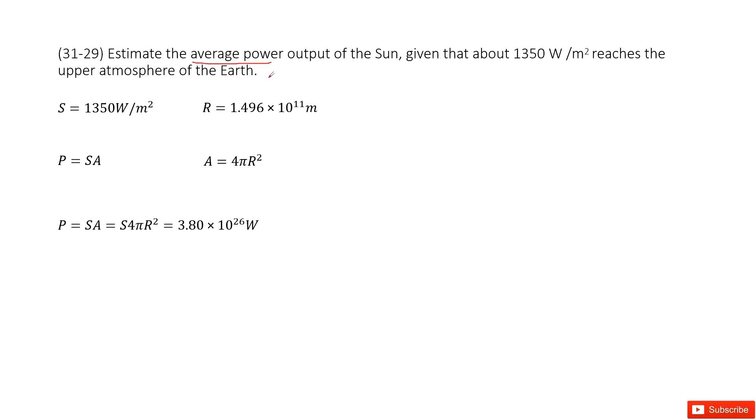Now let's see what quantity is given. First, they tell you the Poynting vector, right? This is a Poynting vector, 1350 watts per meter squared, and it reaches to the upper atmosphere of the Earth.